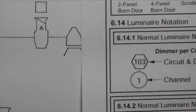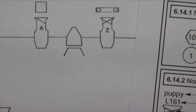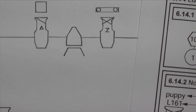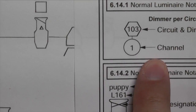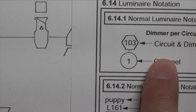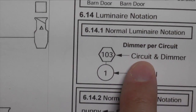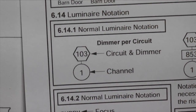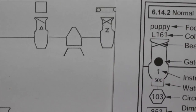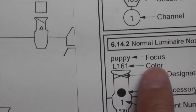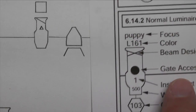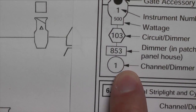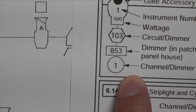Depending on how much information you want to include on the plot itself, it's handy to have the channel number and either the circuit number or the dimmer number in these symbols here. As far as notation — and this is called notation — they would fit behind the unit like so.